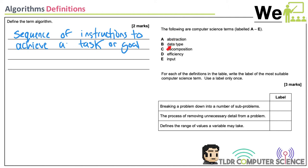Data type. Remember what some of the data types were? Integer, which is a whole number. String, which is word and text. Character — a single letter, could be a number as well. Floating point — a number with decimal places.